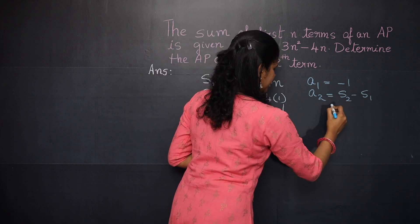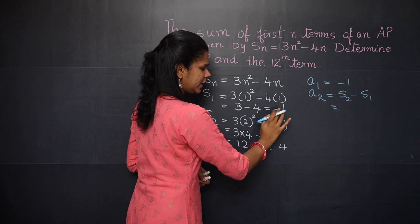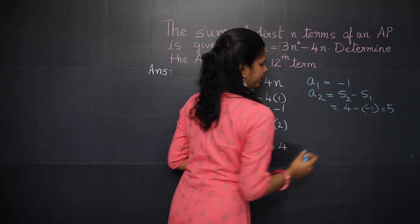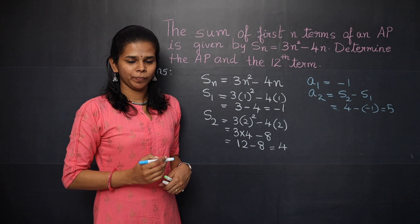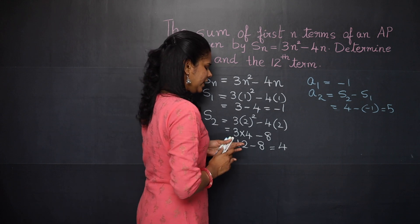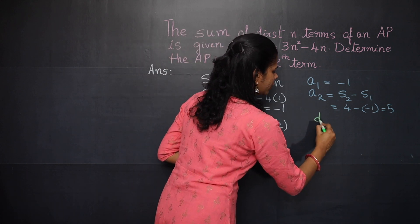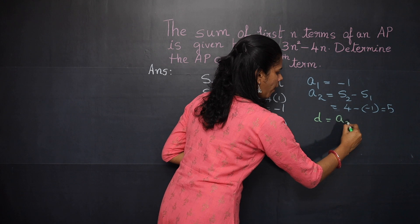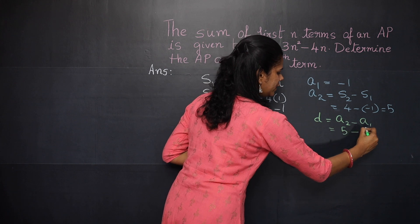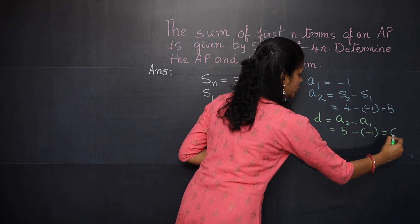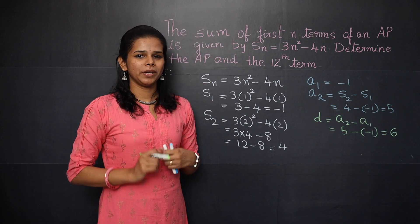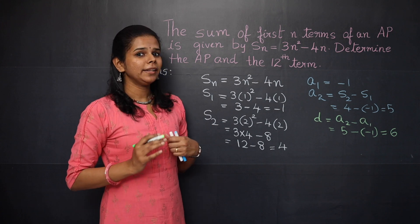A2 = S2 − S1. S2 = 3(4) − 4(2) = 12 − 8 = 4, so A2 = 4 − (−1) = 5. The common difference D = A2 − A1 = 5 − (−1) = 6.